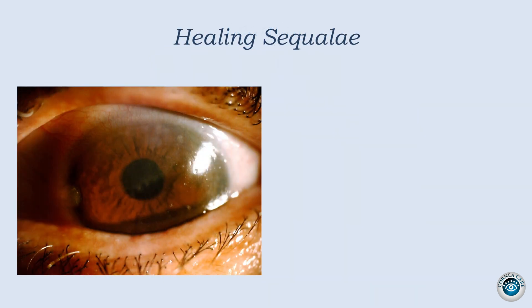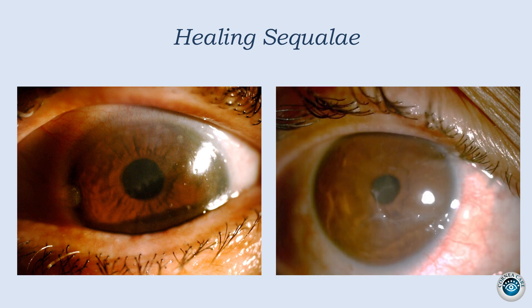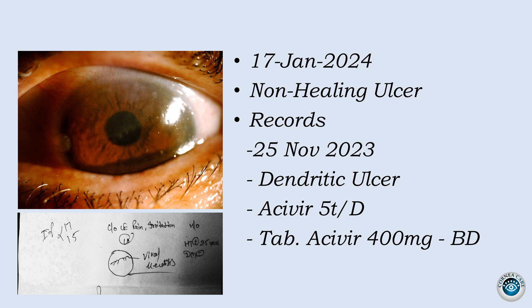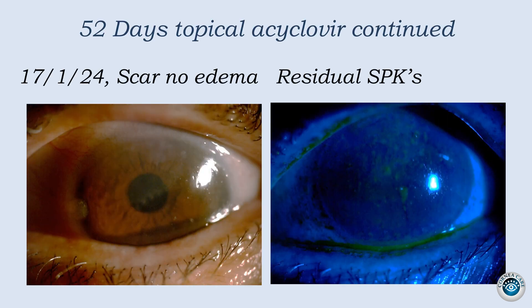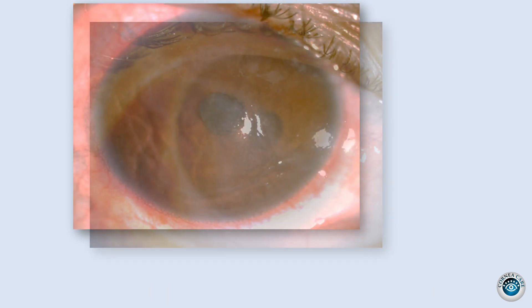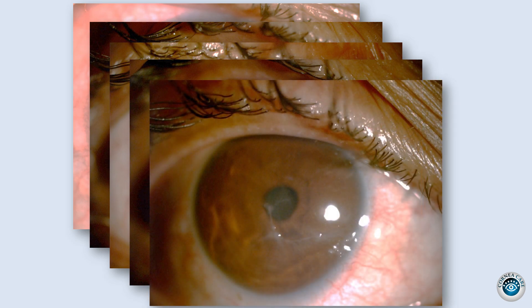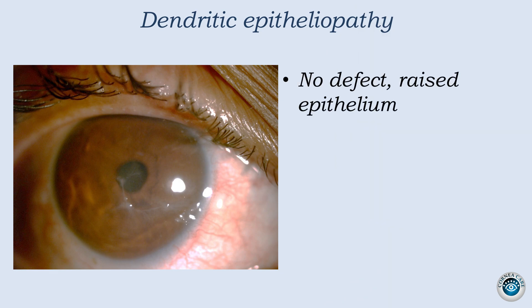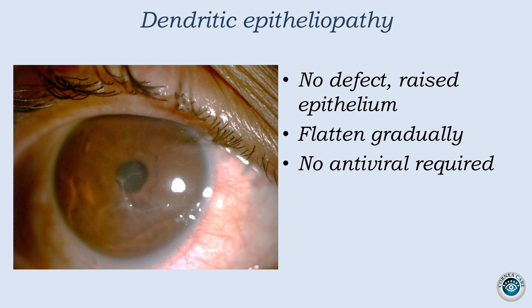The second common mistake is not recognizing the sequelae of resolved dendritic or geographical ulcer. This patient was referred as non-healing HSK and was on oral as well as topical ACV for a long time. Sometimes epithelium remains rough after healing — it does not mean we have to continue antiviral; in fact, our drugs may not be allowing the surface to heal, and oral acyclovir has no role here. Another sequela of healing is dendritiform keratopathy, which occurs when a dendrite — and particularly a geographical ulcer — heals, resulting in heaped-up epithelium with a linear branching shape. There is no epithelial defect, so it's not an ulcer. This epithelium flattens gradually. These sequelae need lubricants and patience only.